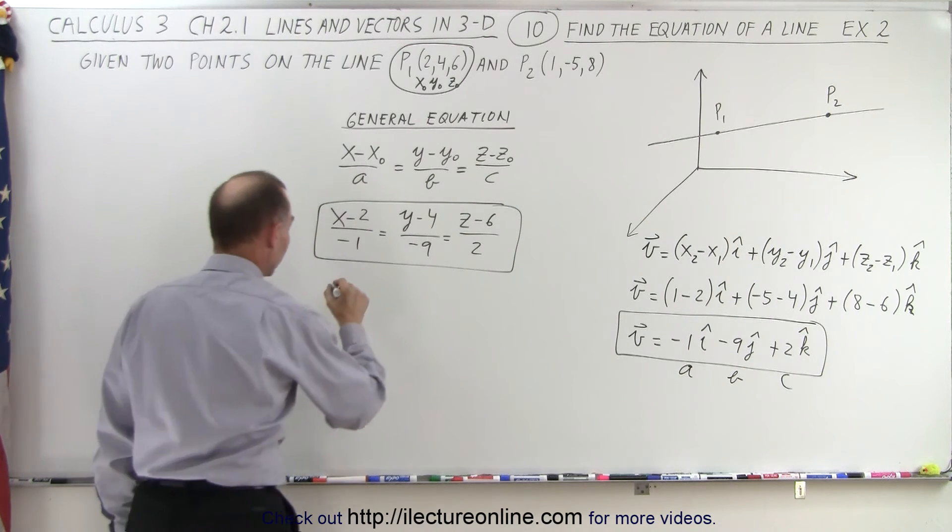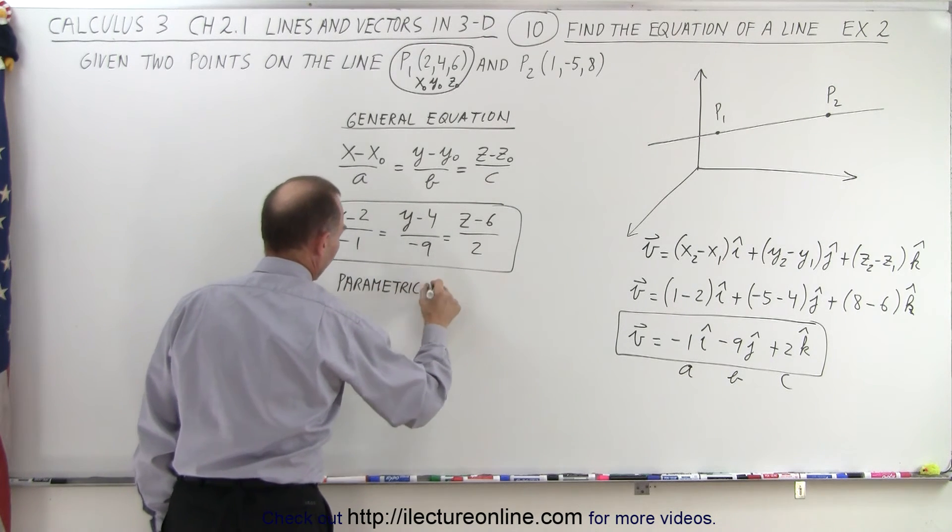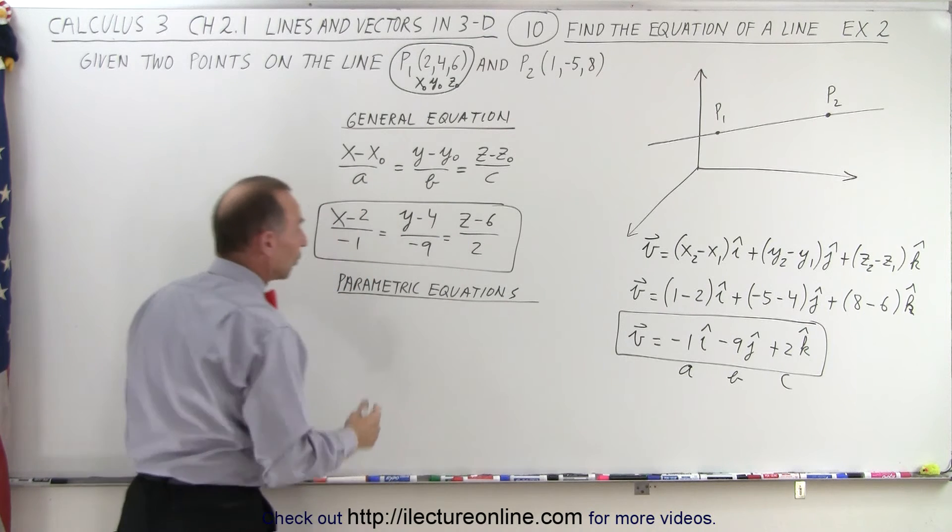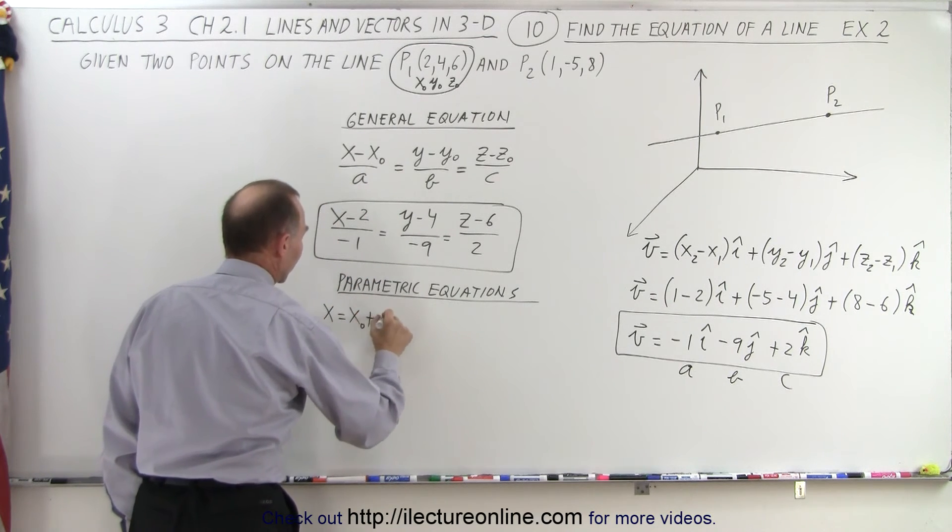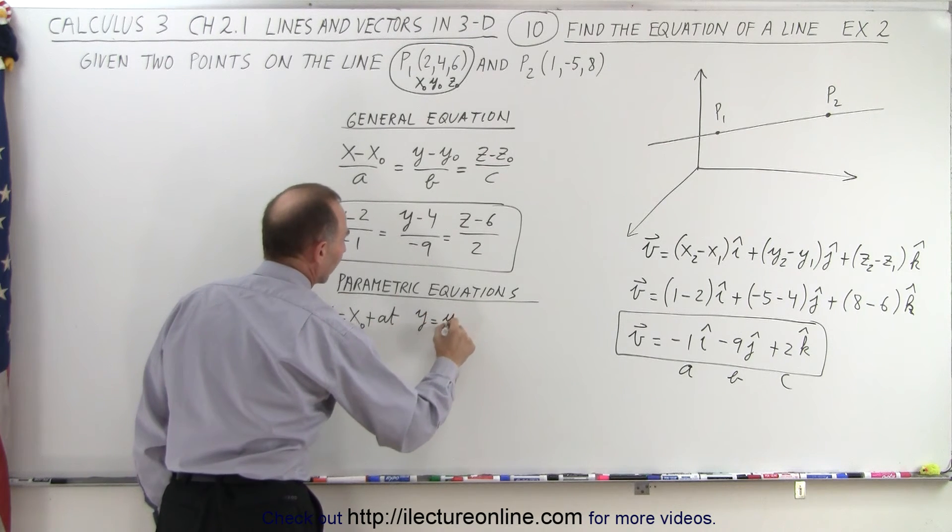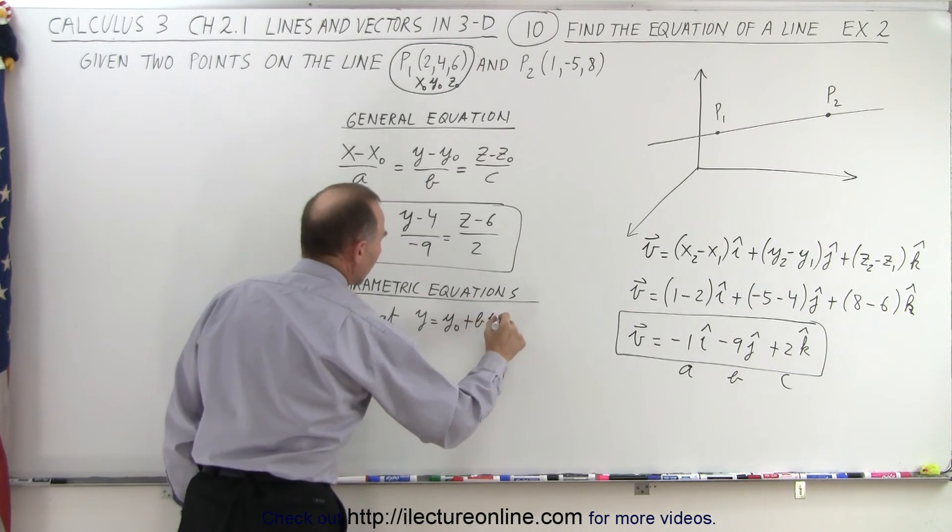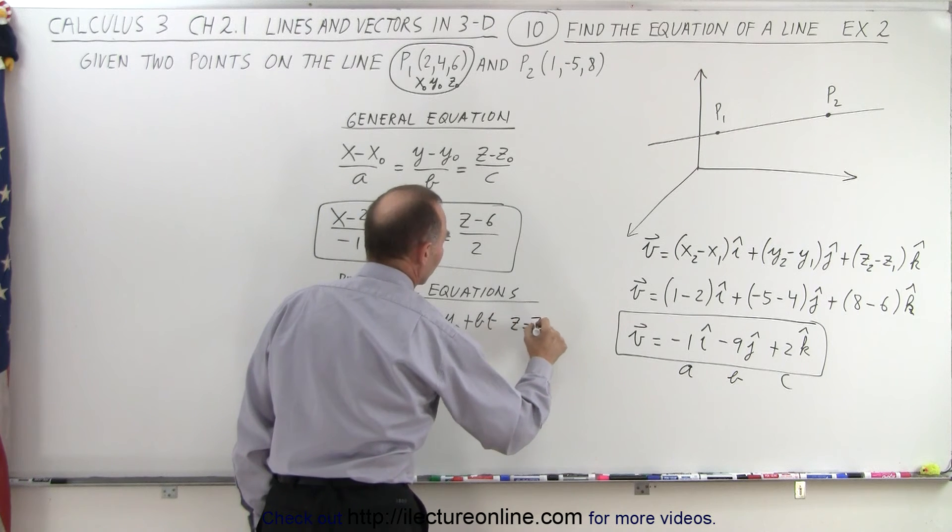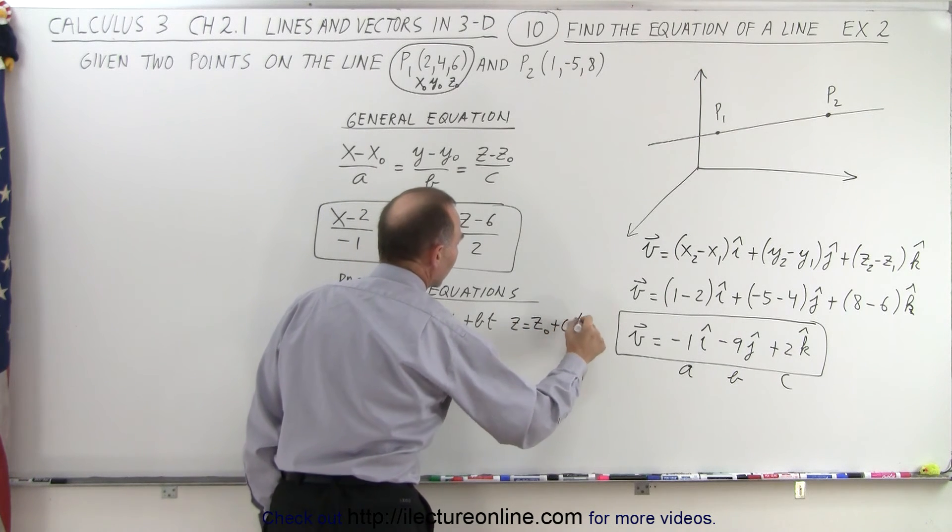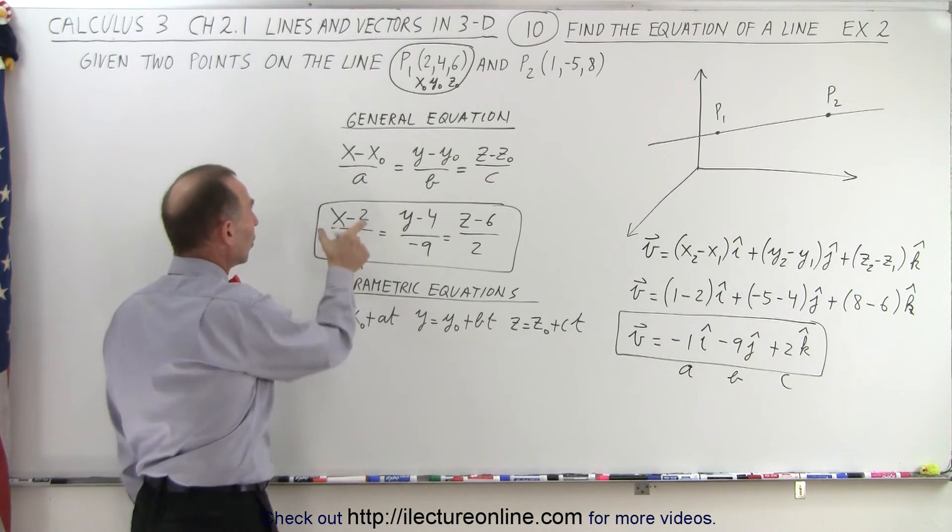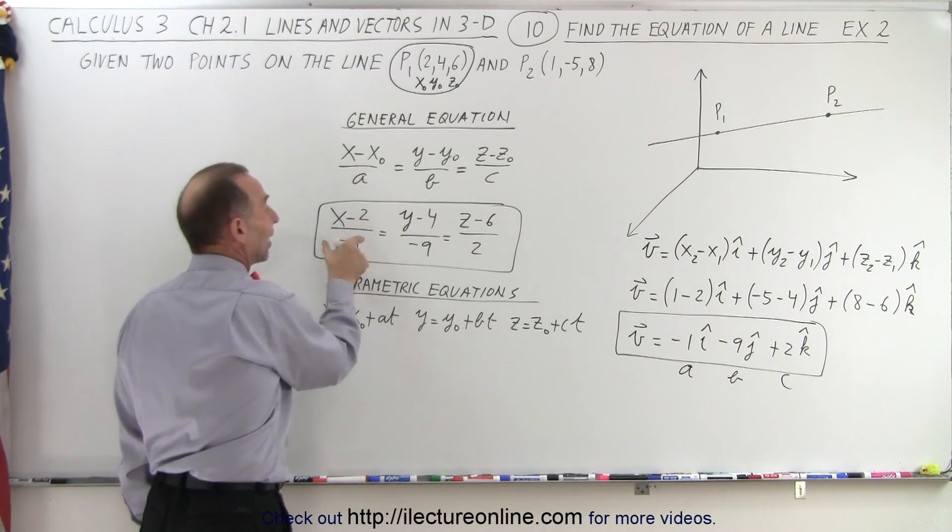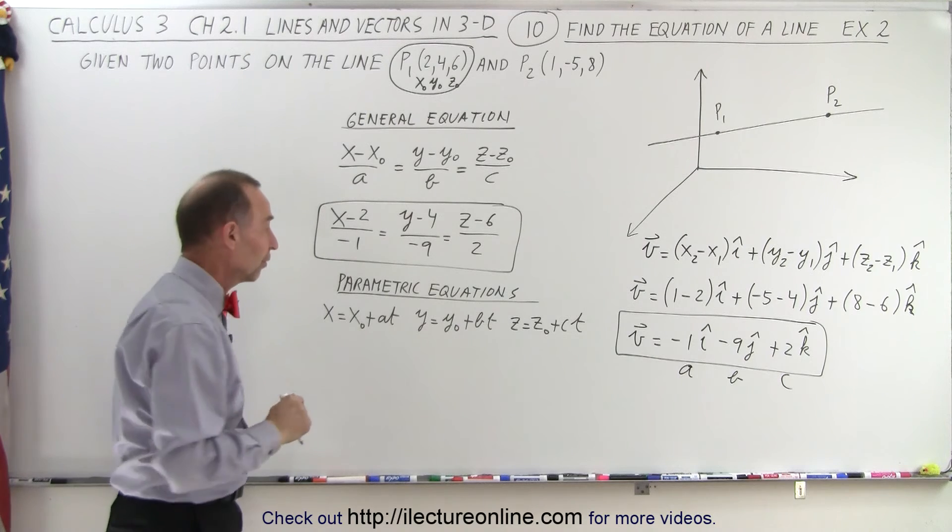Now, to find the parametric equations, we write it as follows. We have x equals x sub 0 plus a t, y equals y sub 0 plus b t, and z equals z sub 0 plus c t. And remember that t represents the ratio, the ratio of the difference in x values divided by the length of the components of the parallel vector.